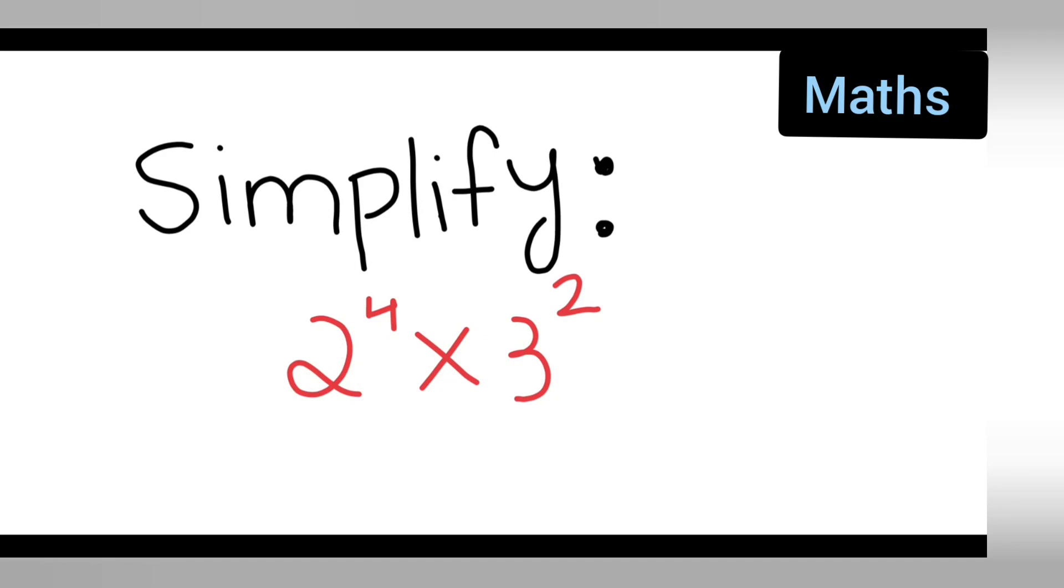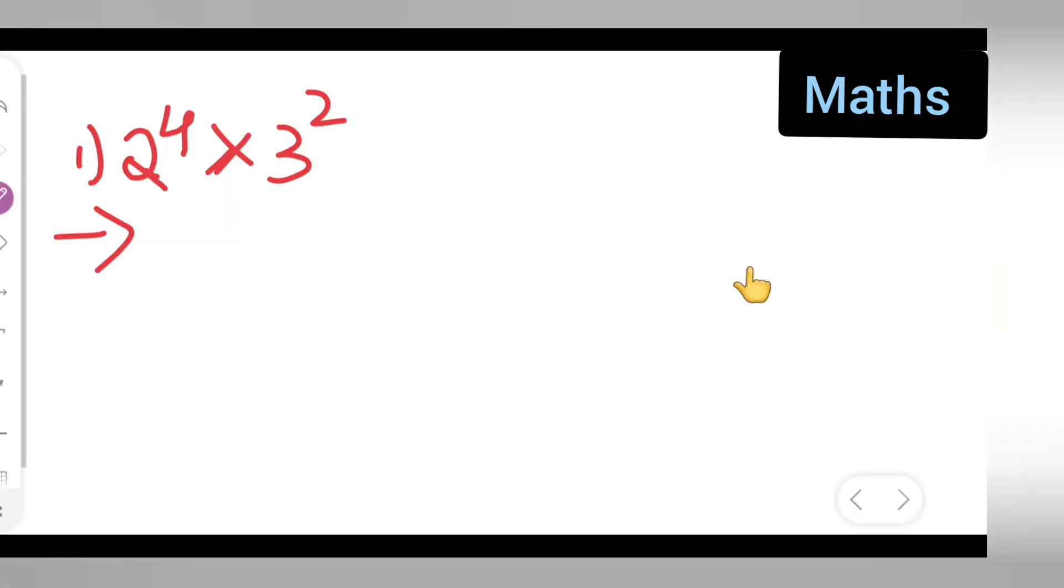So in today's class of mathematics, let us see how to simplify 2 raised to power of 4 multiplied by 3 square. So first I'll take down the question: 2 raised to power of 4 multiplied by 3 square.